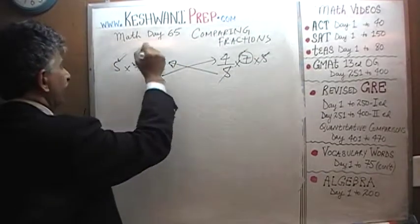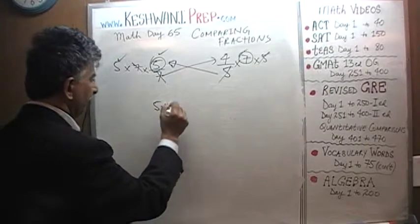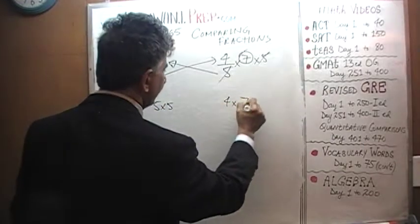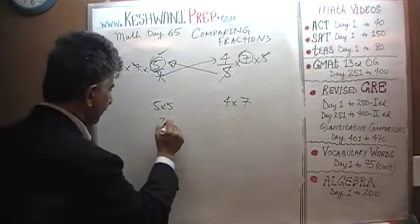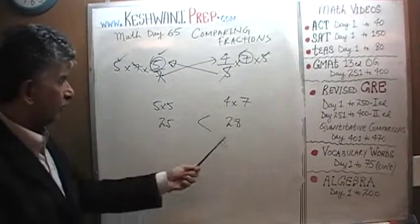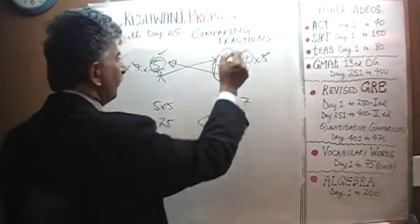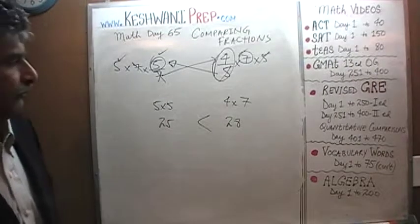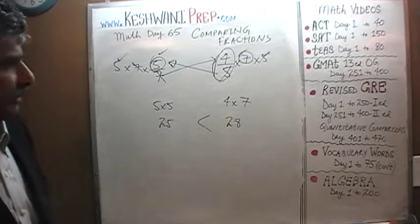So what do we end up with? We end up with 5 times 5, and here we end up with 4 times 7. 5 times 5 is 25 and 4 times 7 is 28. 28 of course is more than 25 which means 4 fifths is the bigger fraction.